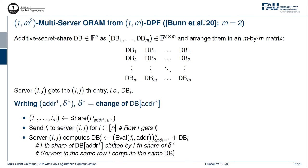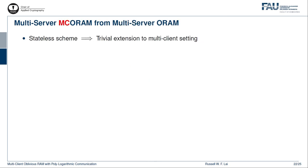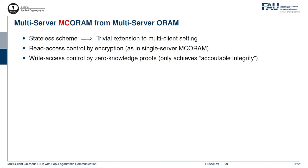Oblivious write can be done similarly, but this time the DPF shares are distributed row-wise. Since the multi-server ORAM scheme is stateless, it is straightforward to adapt it to the multi-client setting. Then, to make it a full-blown MC ORAM, we just need to add read and write access control. To this end, read access control can be done by encryption, like in the FHE-based single-client MC ORAM construction. Write access control can be done using zero-knowledge proofs. This approach, however, only results in a weaker integrity called accountable integrity. Achieving full integrity seems to be impossible in the multi-server setting.